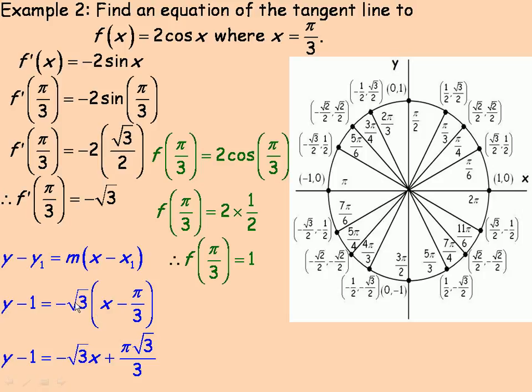Now if we expand this out, -√3 times x is -√3x. -√3 times -π/3 is positive—negative times negative is positive—so π times √3 over 3. Then solving for y in the form y = mx + b, we bring the 1 over. So it's -√3x plus π√3/3, and then plus 1. That's the equation of our tangent line.